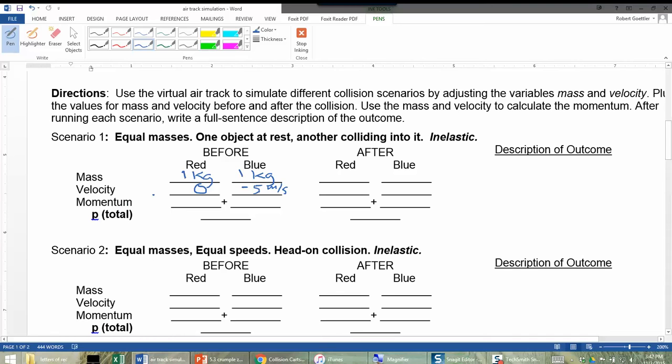So to calculate the momentum, we're going to do mass times velocity equals momentum. So one times zero is zero. One times negative five is negative five. Add these two together, we get a total momentum of the two of them being negative five.